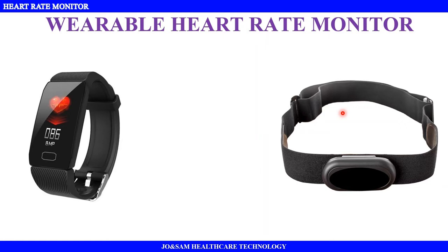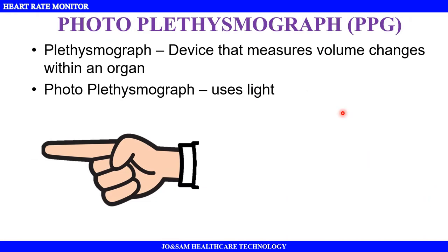Here we will calculate the optical method — we calculate using the photoplethysmography (PPG) method. What is a plethysmograph? In the device, volume changes are measured. That is the plethysmograph. For photoplethysmography, we use light to measure those volume changes.